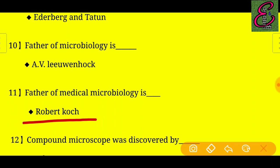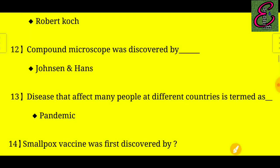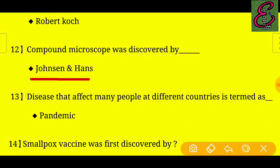Question number twelve: Compound microscope was discovered by whom? Answer: It was discovered by Johnson and Hans.